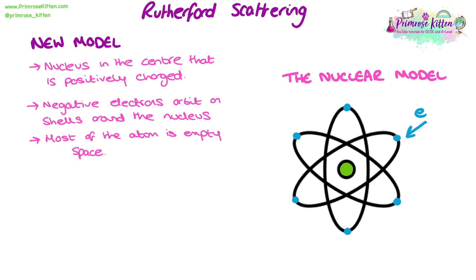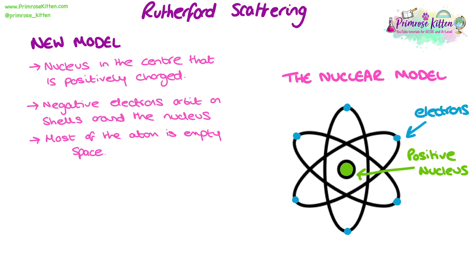In the diagram of the nuclear model, we can see the electrons orbiting the nucleus on shells, with the positively charged nucleus at the centre. We can also see that empty space Rutherford referenced — it's not a solid mass like the plum pudding model. Instead, there is a positive nucleus, then quite a lot of empty space, until you reach the shells where the electrons are housed.